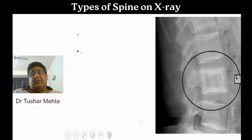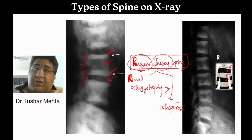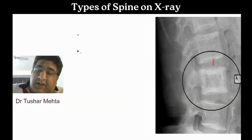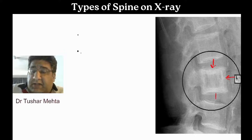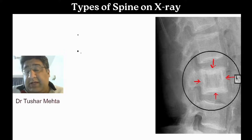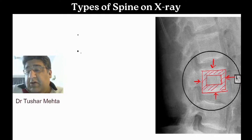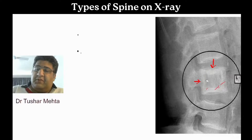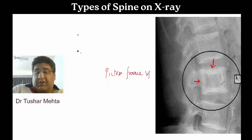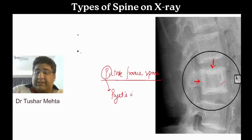In the explanation of this question, I want you to see one more sign. Here you can see that the superior end plate is dense, the anterior end plate is dense, the inferior end plate is dense, and the posterior end plate is dense — all four end plates are dense with an empty space in the center, looking like a picture frame with an empty space to put your picture in. This is called picture frame spine.